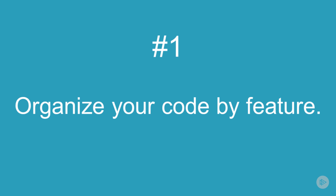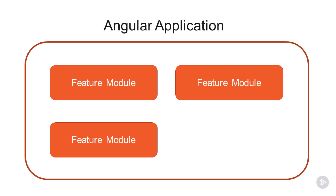Apart from how your files are structured in the project, this also means organizing your code into Angular feature modules. Creating a single module for each large feature in your application has several nice benefits. First, using feature modules encourages the type of file organization I just mentioned, so all of your files and folders stay nice and tidy. Also, when working on large applications, you can trust that everything you need related to a particular feature is in a single module and that importing that module will give you access to everything you need. Finally, feature modules may be lazy loaded, which means they won't be downloaded from the server until they're actually needed, which can greatly improve the efficiency of your app.